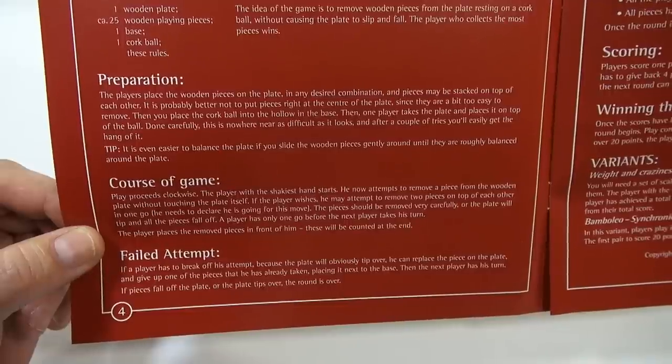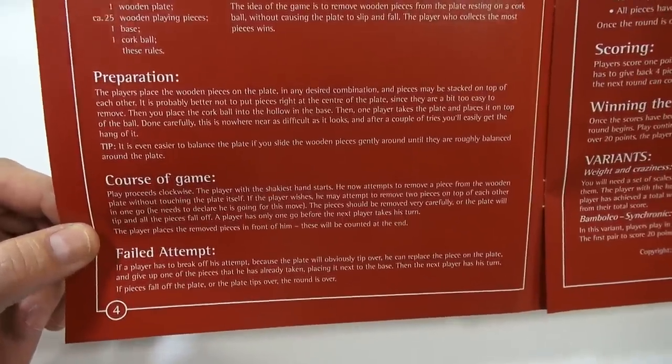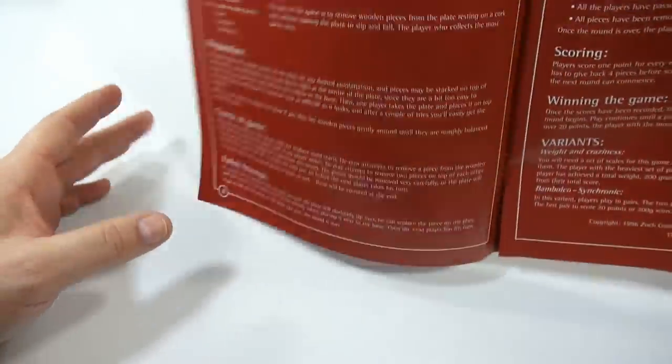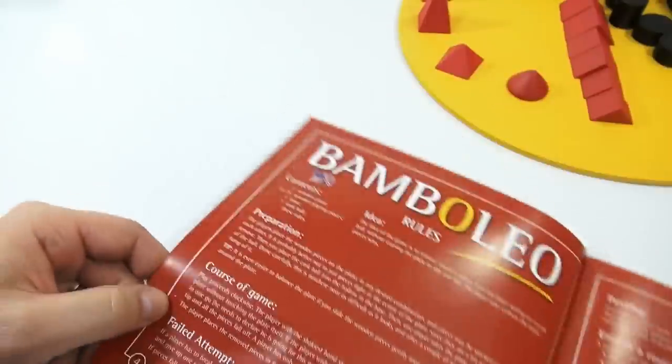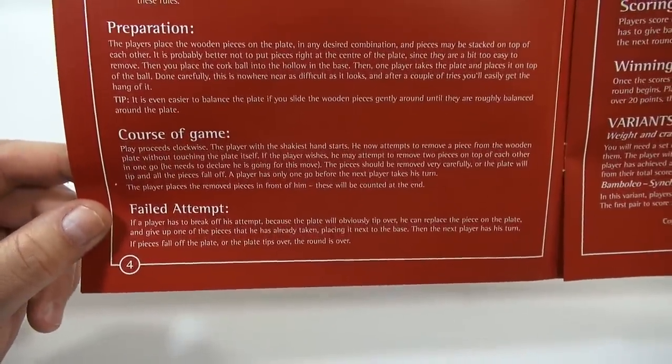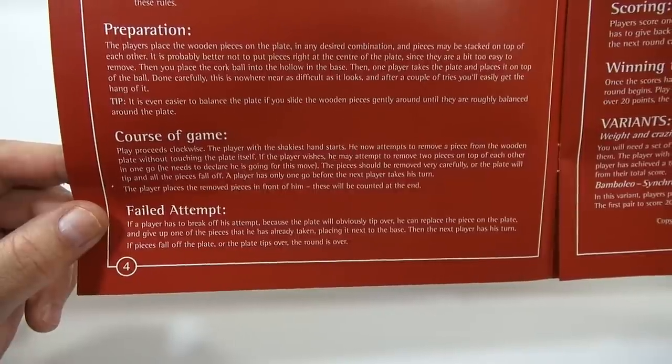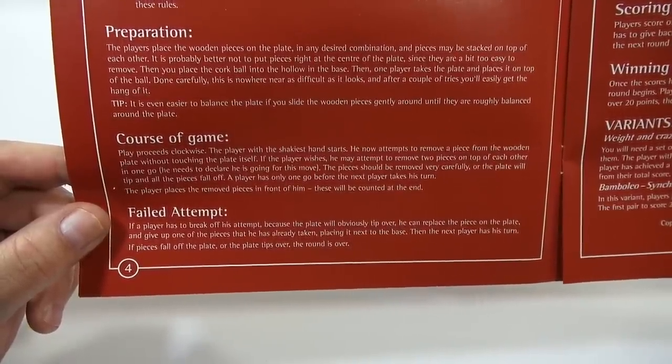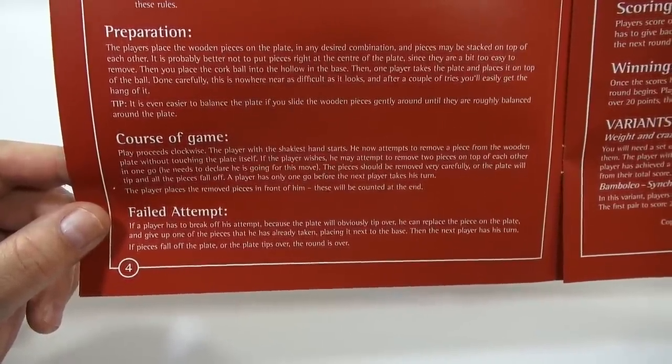The pieces should be removed very carefully or the plate will tip and the pieces fall off. A player has only one go before the next player takes his turn. The player keeps removed pieces in front of him. This will be counted at the end. In case of a failed attempt, if a player has to break off his attempt because the plate will obviously tip over, he can replace the piece on the plate and give up one of the pieces that he has already taken, placing it next to the base.